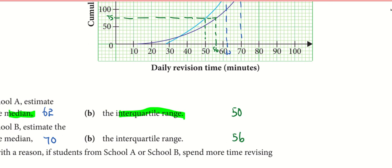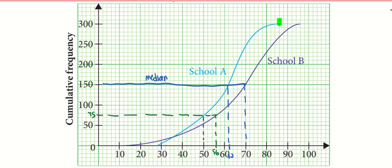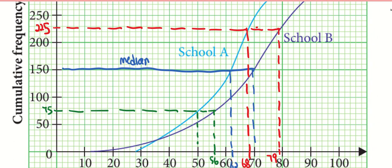Why? Because for interquartile range, I have to use upper quartile minus the lower quartile. Now let me go to my upper quartile. Upper quartile can be three quarters of 300. So the population will be at 225. For upper quartile, for School A, I have 68, and for School B, I have 79. Let me put it in as well.